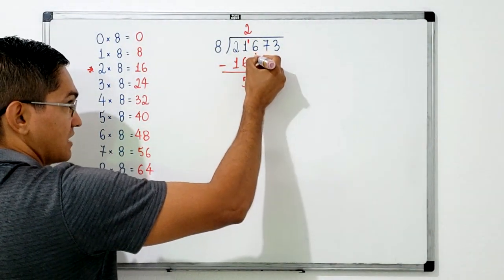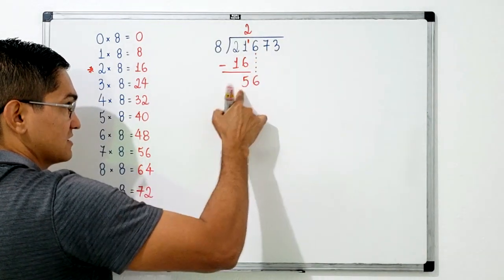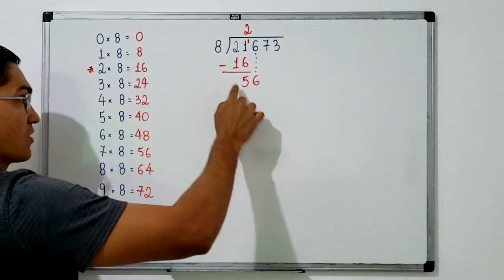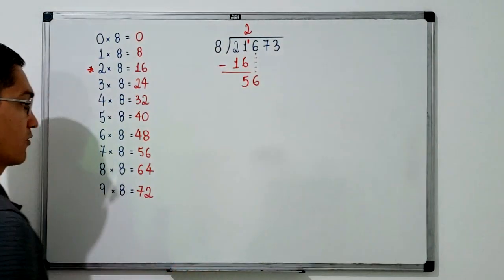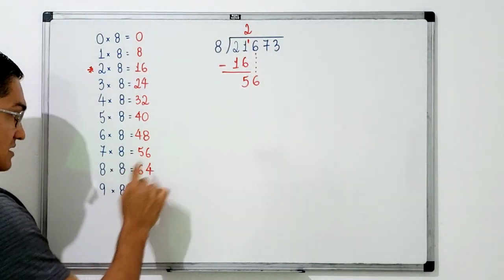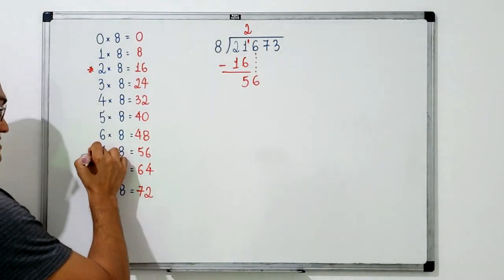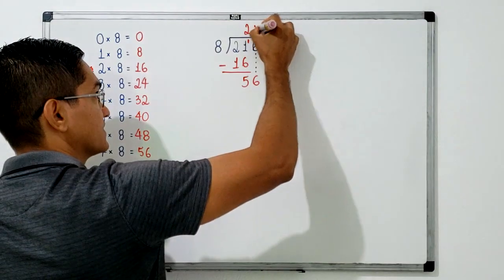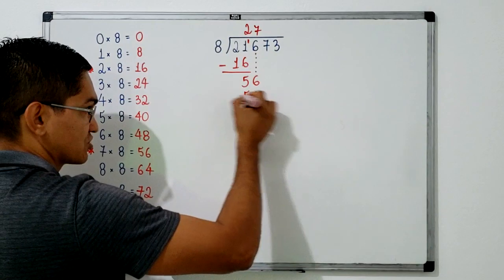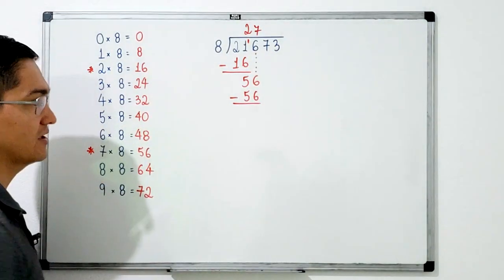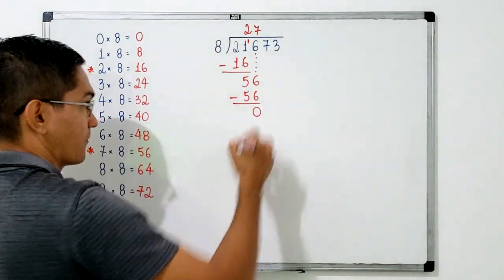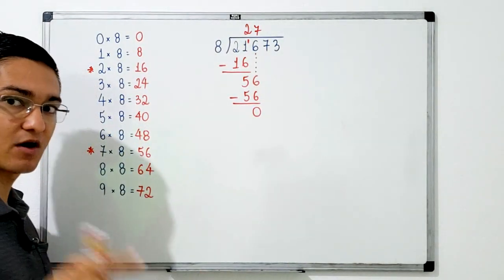Bringing down the next digit, we find 56. I ask: how many times does 8 go into 56 without going over? From the table, 7 times 8 equals 56, so we go with 7. I write 7 in the quotient. Since 7 times 8 equals 56, I write it here and subtract: 56 minus 56 equals 0.